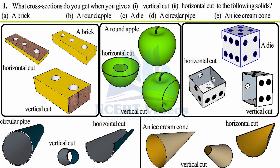Let's start answering. First, a brick — this can be an ice cream brick. First, let's perform a vertical cut on it. Vertical means you are taking your knife and cutting it perpendicularly. The brick will be divided into two sections, and one section will look like this. The cross section is this newly generated face that we get after cutting it vertically. As you can see, it is a rectangle.